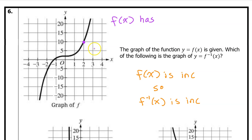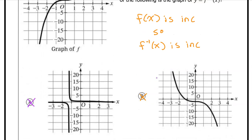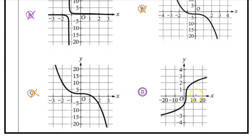If there had been more than one increasing option, here's how to solve it: pick one point on the original function — for example, f of x has the point 2 comma 10. Then f inverse would have the point 10 comma 2. Look at the remaining options to see which one contains 10 comma 2. Option D does include the point 10 comma 2 — further confirmation.